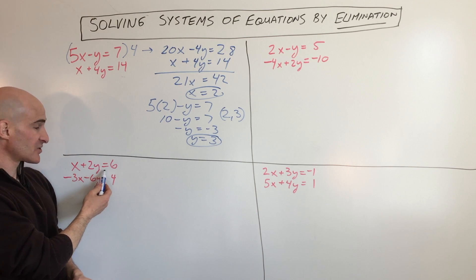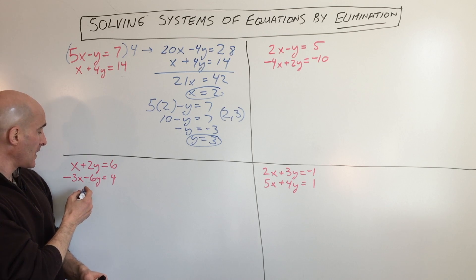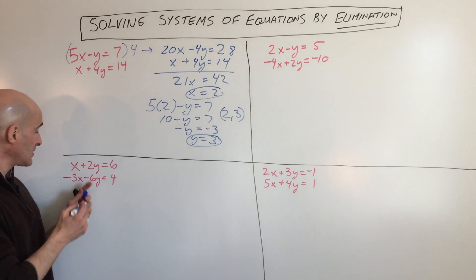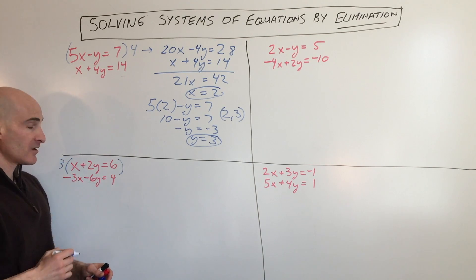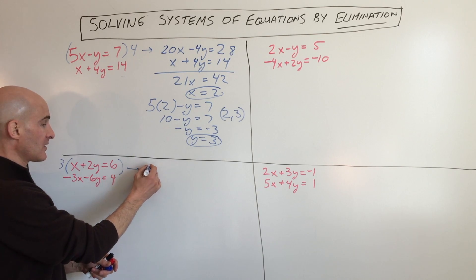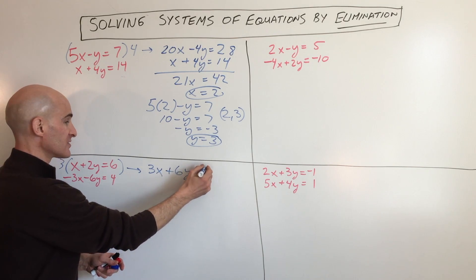Here we've got x plus 2y equals 6, negative 3x minus 6y equals 4. Here what we'll do is we're going to multiply the top equation times positive 3, so that we can eliminate the x's. So if we do that, we get 3x plus 6y equals 18.